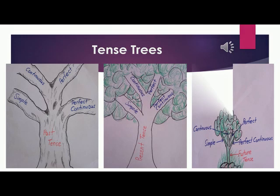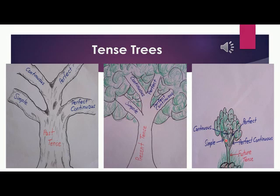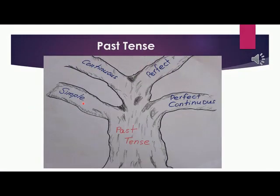How many trees can you see there? We can see three trees there. The first, the tree of past tense. The second, the tree of present tense. And the third is the tree of future tense. Look at the branches of them. Look at the past tense tree — it has four branches: simple, continuous, perfect, and perfect continuous.